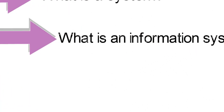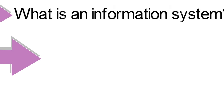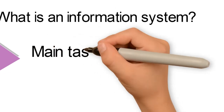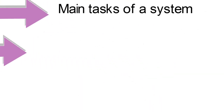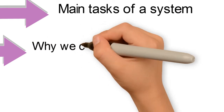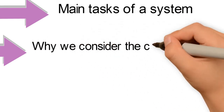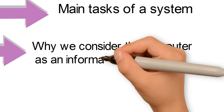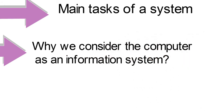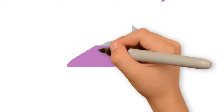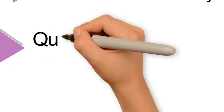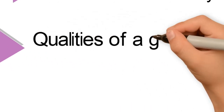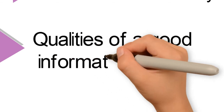The first thing about the information system is to talk about AIP, computer, and information systems. The next point is the qualities of good information.